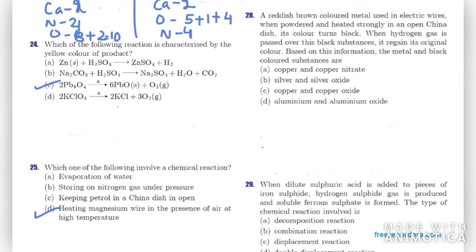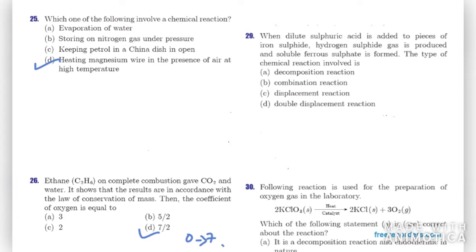Question twenty-eight: a reddish-brown metal used in electric wires, when powdered and heated strongly in an open china dish, turns black. When hydrogen gas is passed over this black substance it regains its original color. The metal is copper. The black substance is copper oxide (CuO). The right option is C — copper and copper oxide.